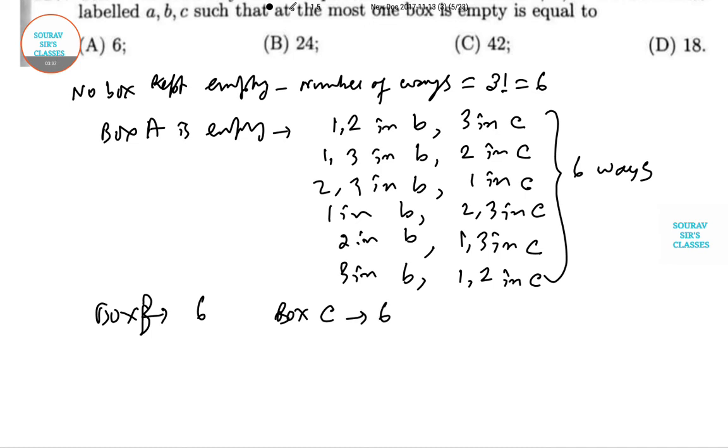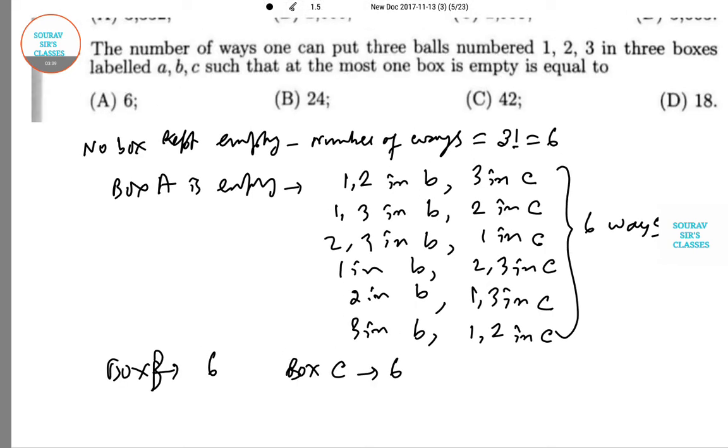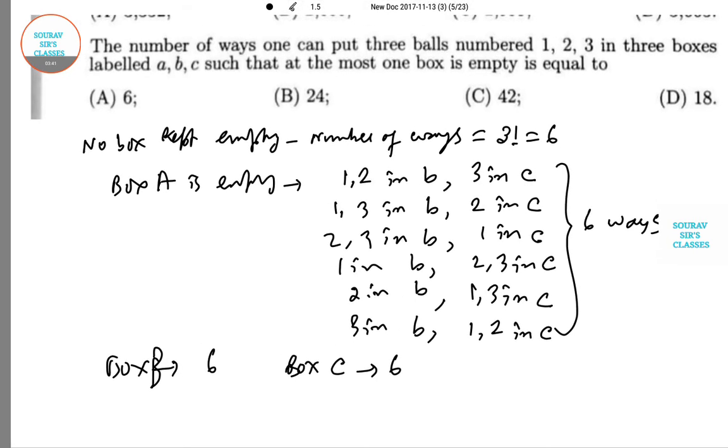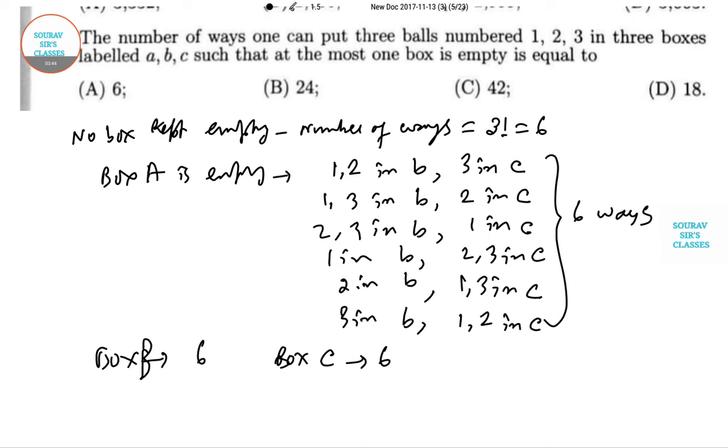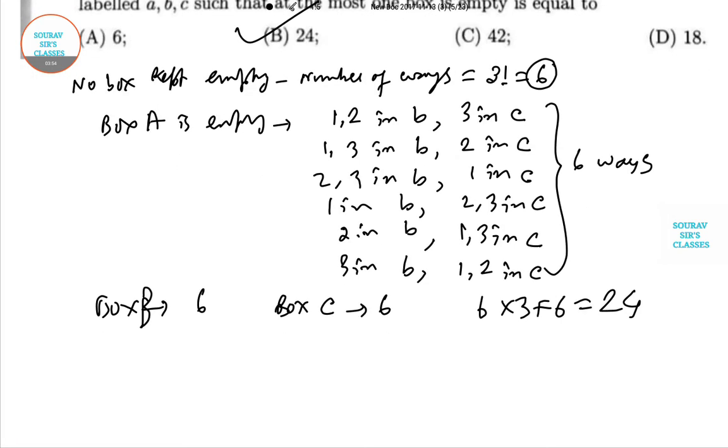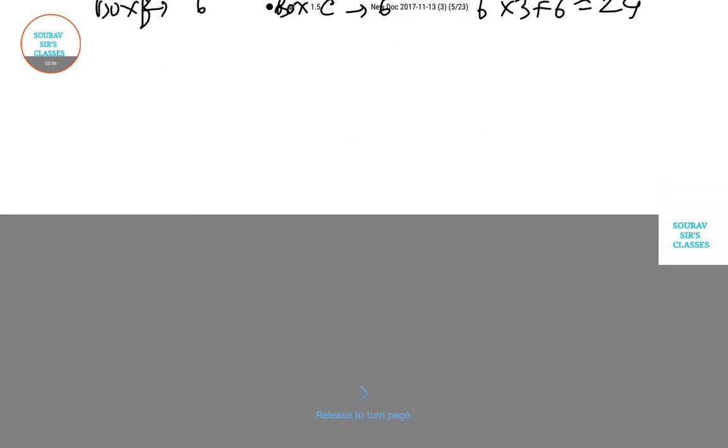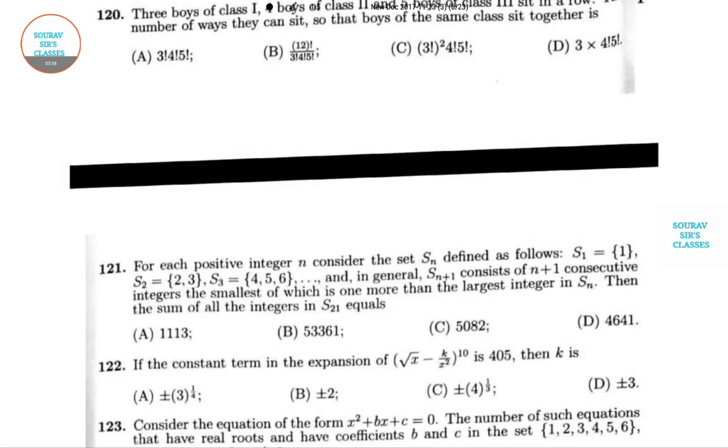Therefore, the total is 6 plus 6 times 3, which is 6 plus 18 equals 24. So our option becomes B. Let's do the next question here.